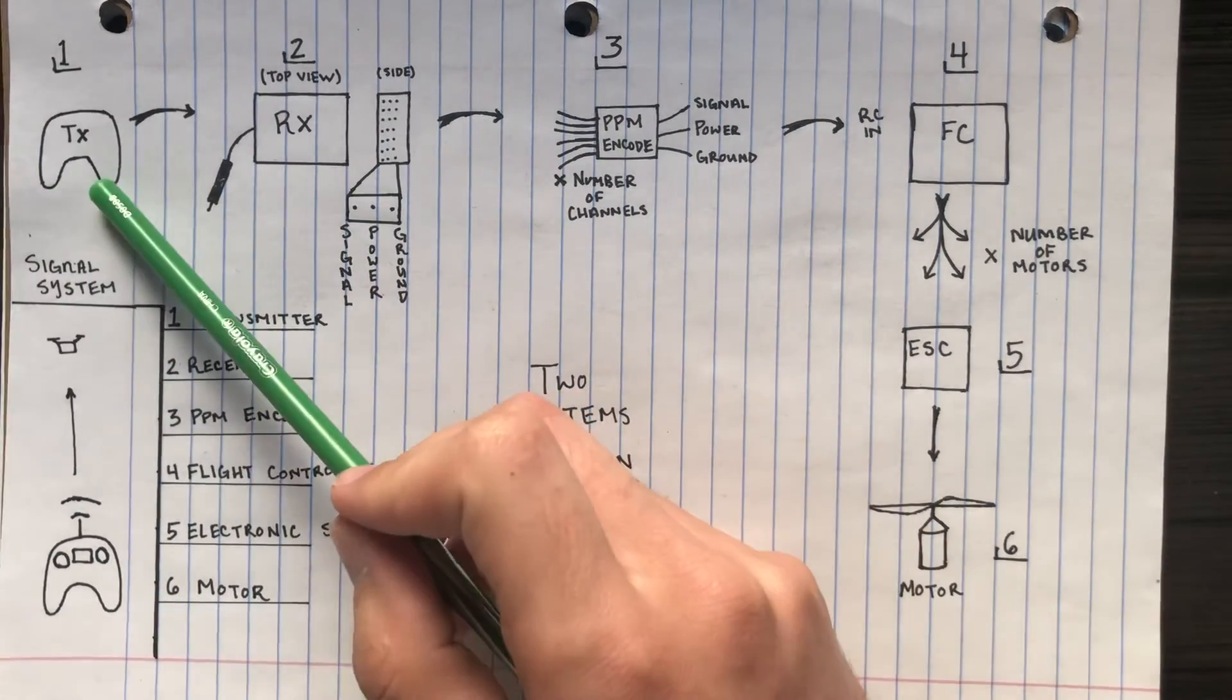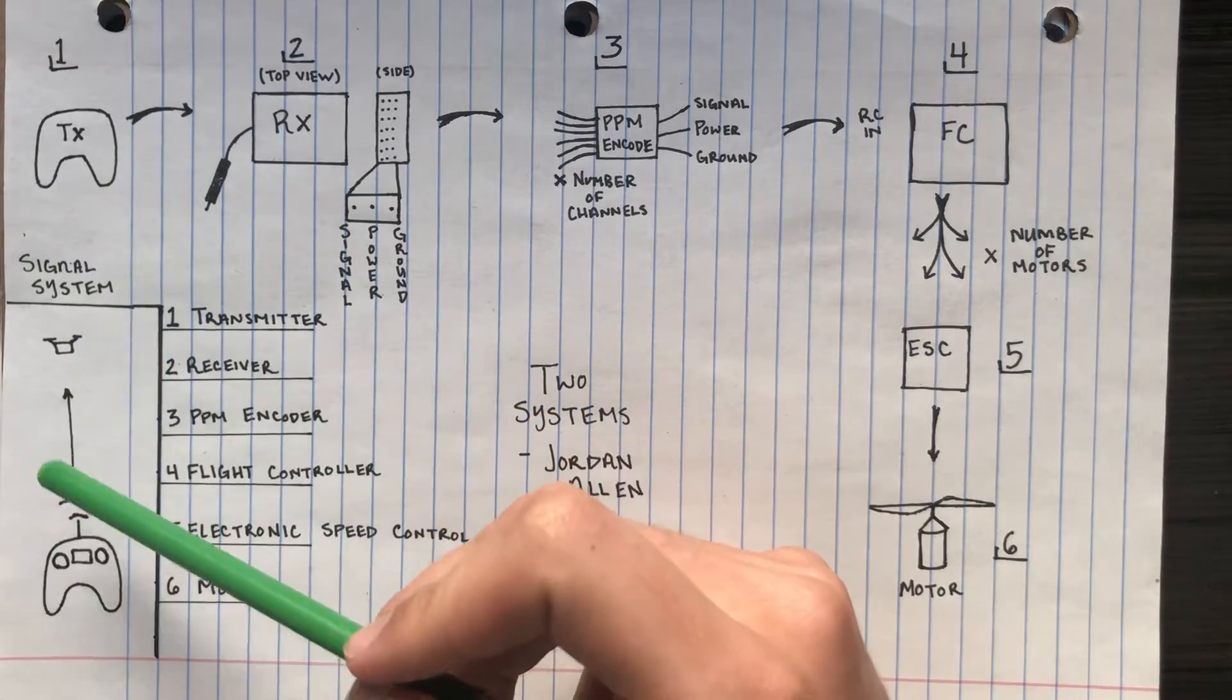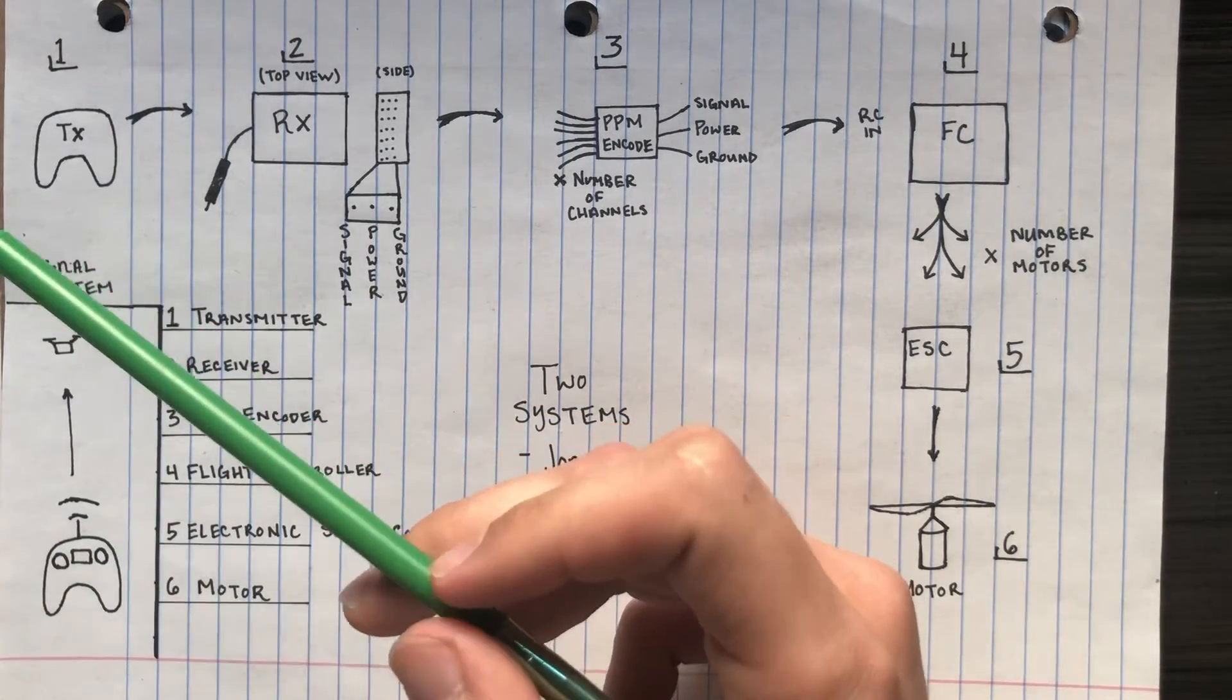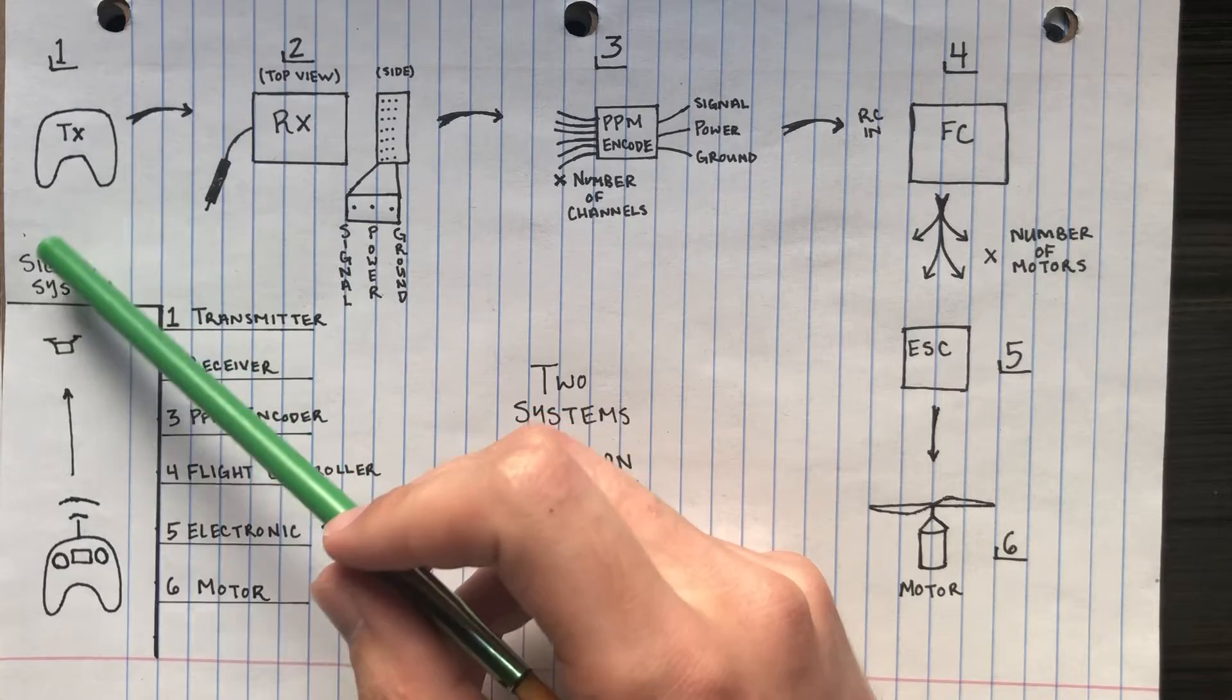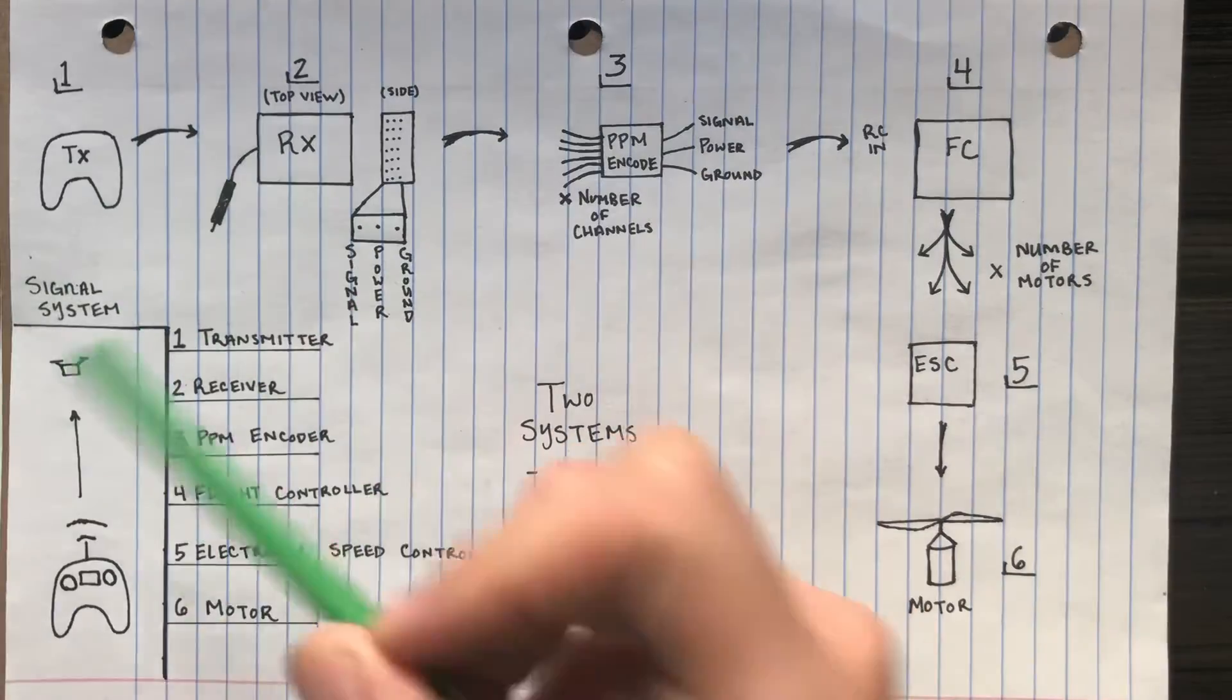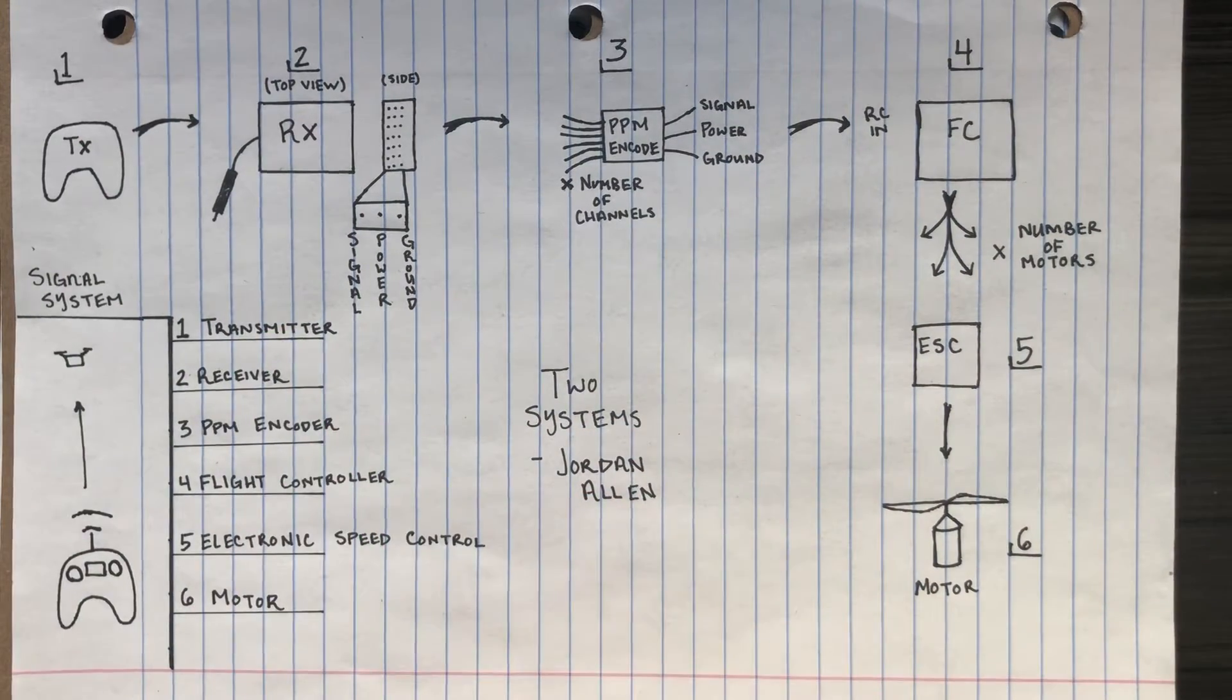So first off, start off with the TX or the transmitter. Transmitter is your typical controller. You send a signal to your quadcopter saying if you want it to go up, down, whatever you want to do with it.